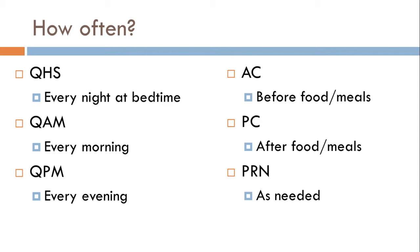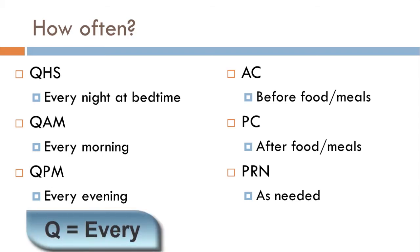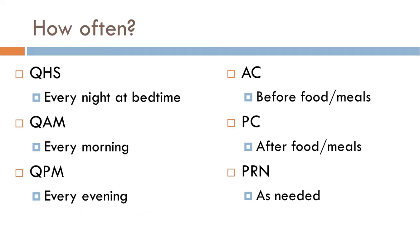Now let's look at time-of-day codes. QHS means every night at bedtime. QAM means every morning — 'Q' means every, 'AM' means morning. QPM means every evening. Here's an important pair: AC means before meals — if you know Spanish, 'comida' means food, so AC is before food. PC means after meals — think 'post,' meaning after. And PRN simply means as needed.